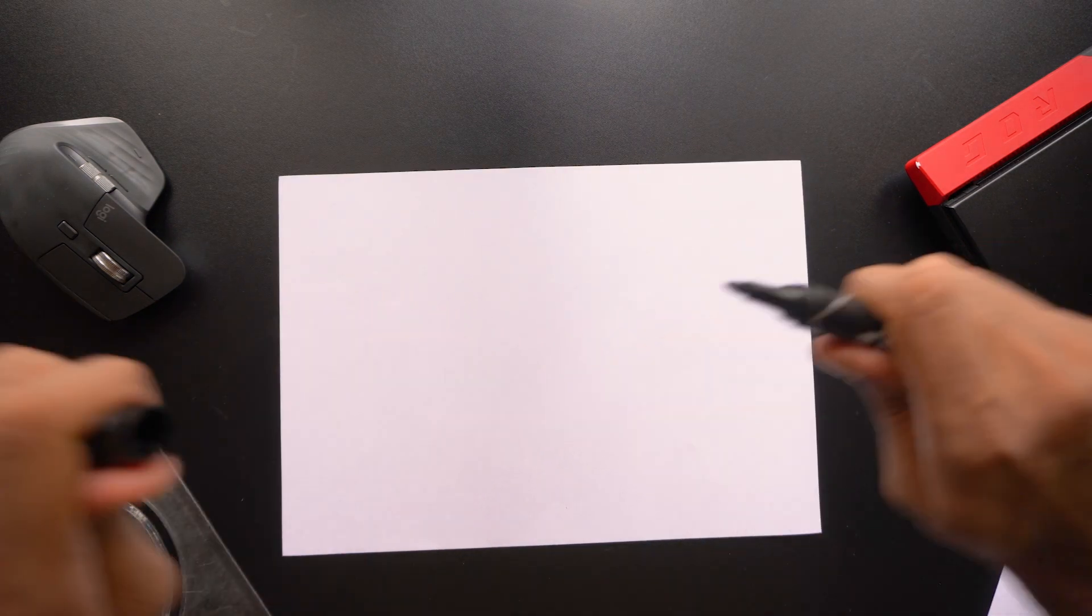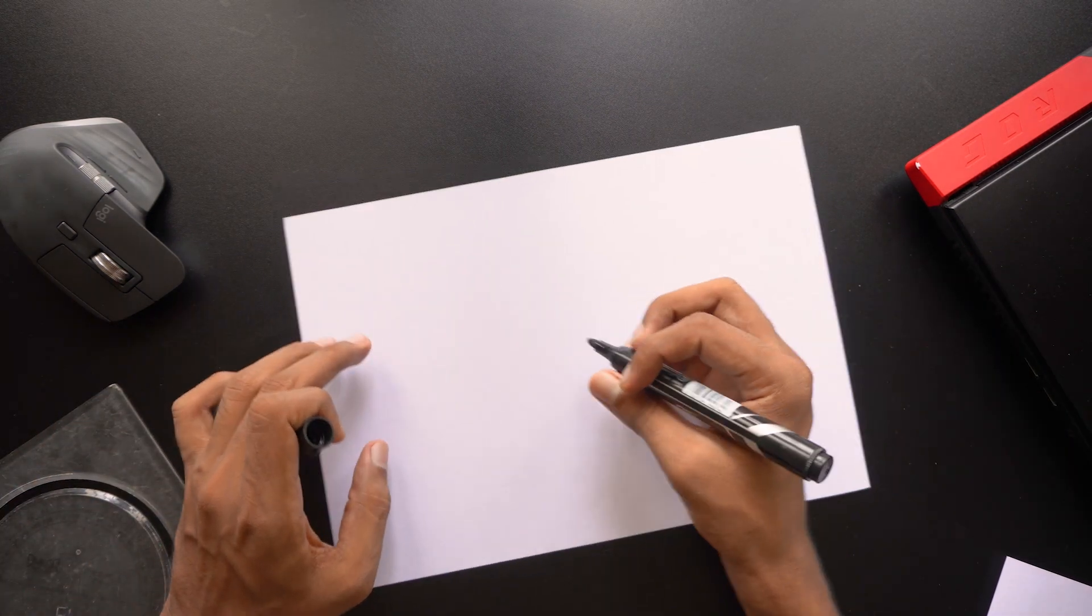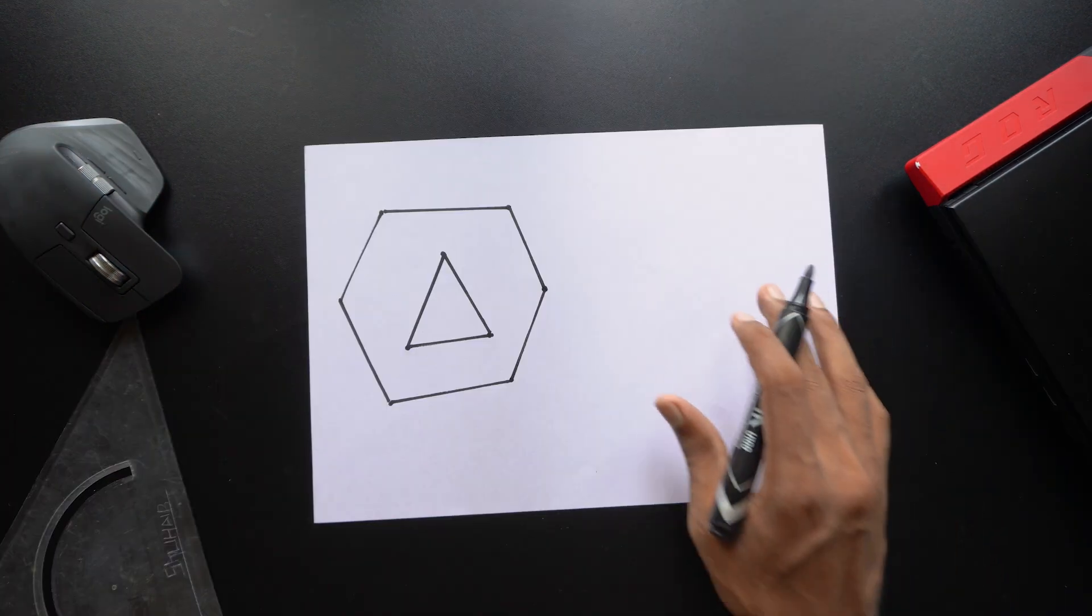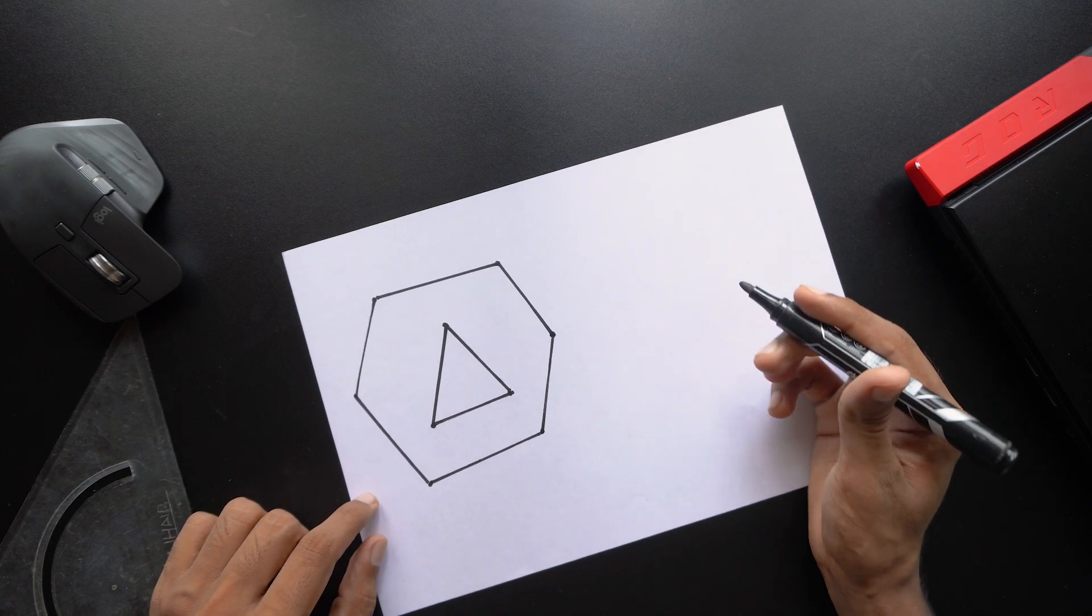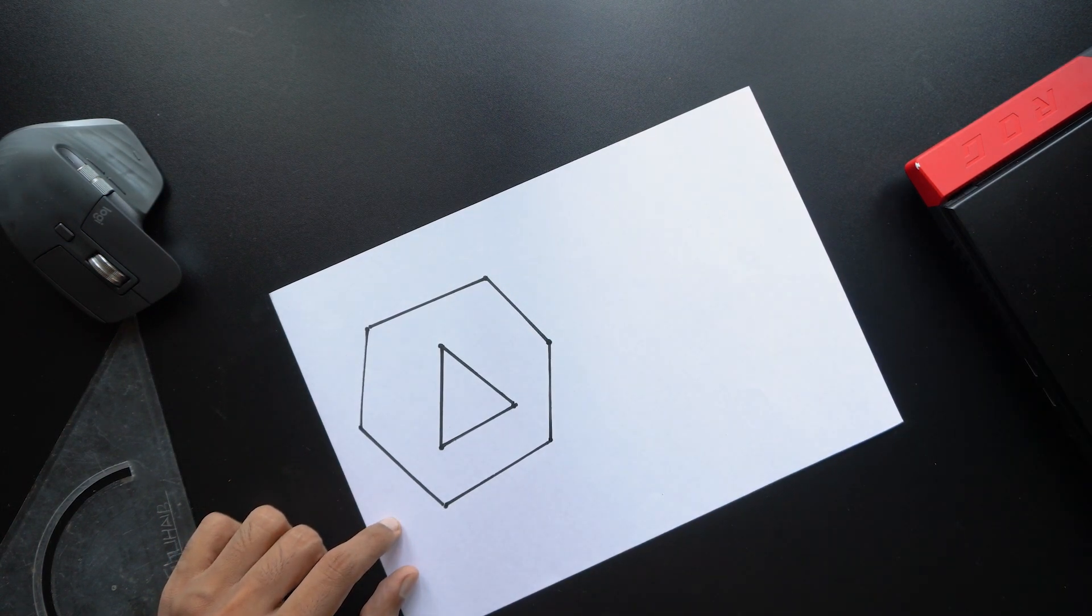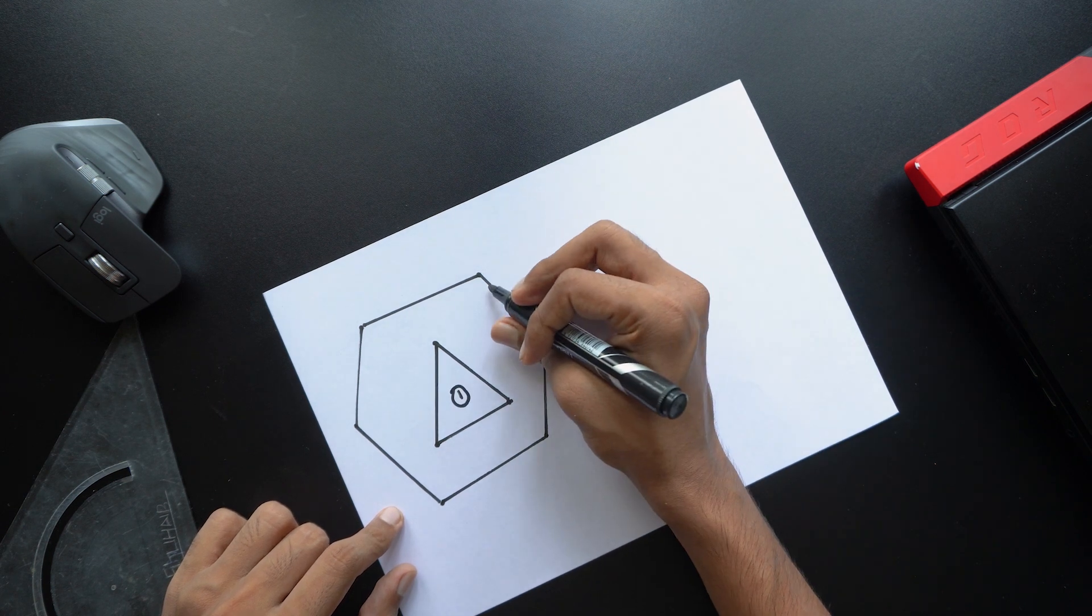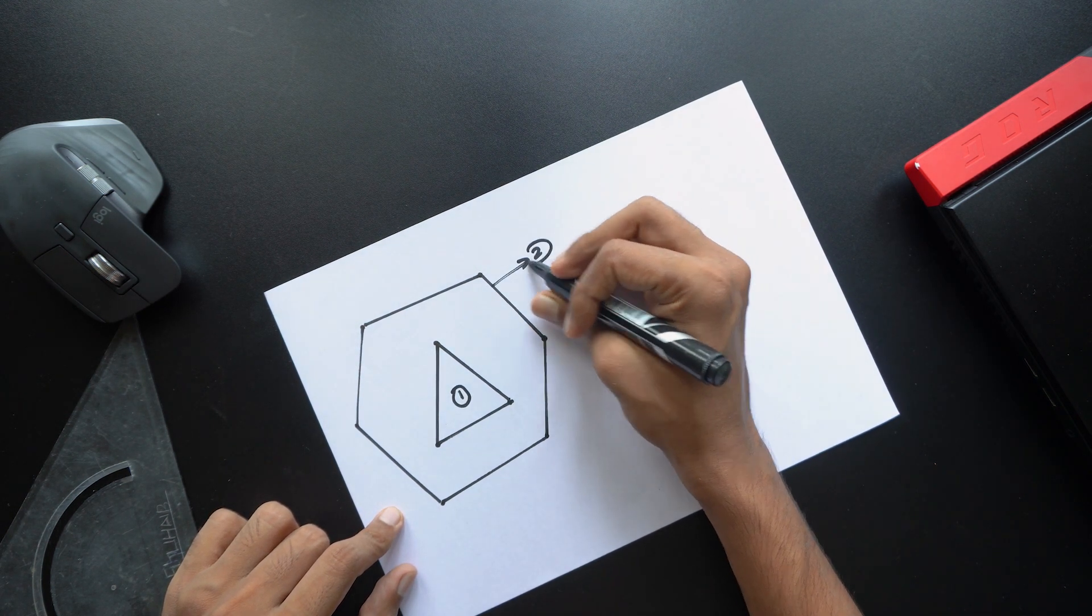So let's start off by drawing the basic shape first. I'm going to start with the triangle. Well I know this isn't perfect but this will definitely get the point across. So right now we have two shapes. The first one is this one. This is our shape number one and this is our shape number two.